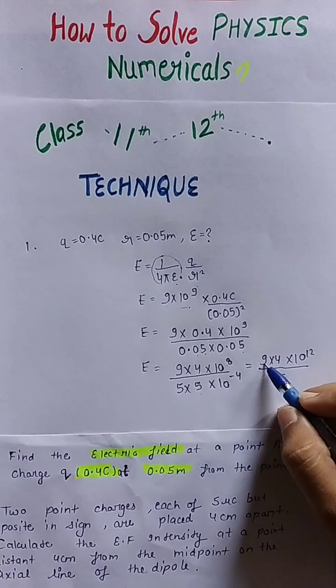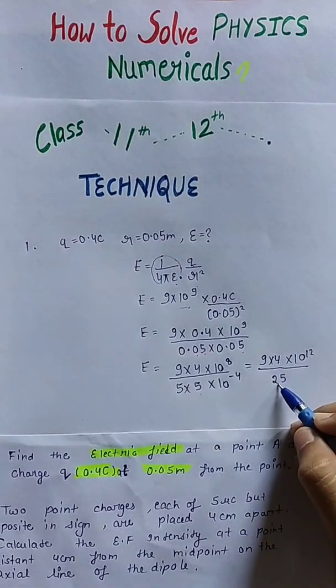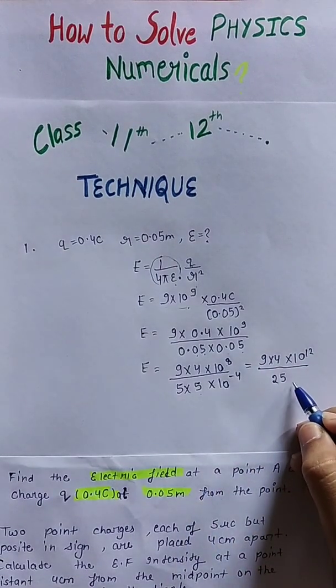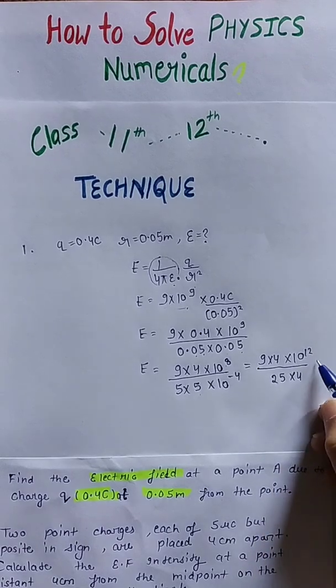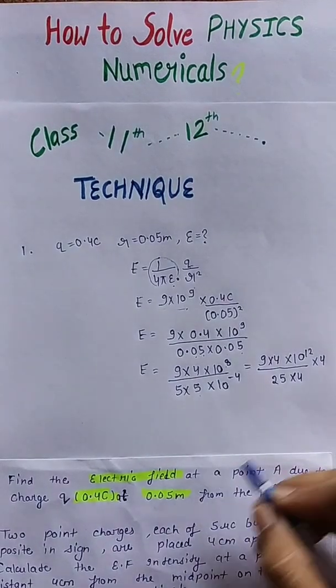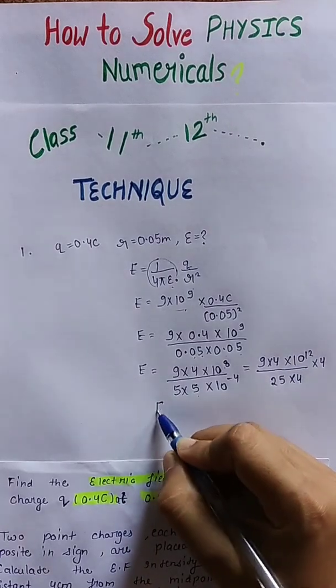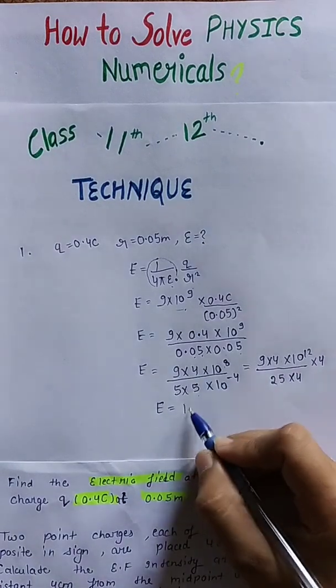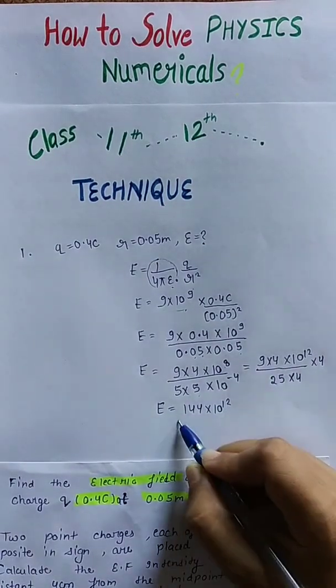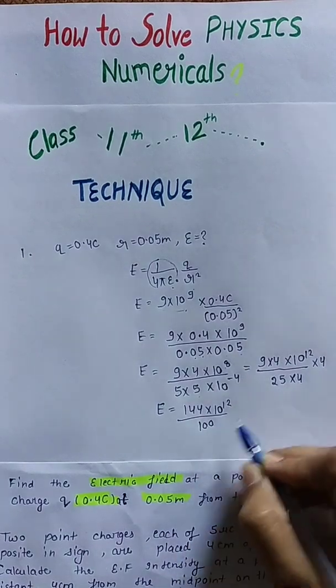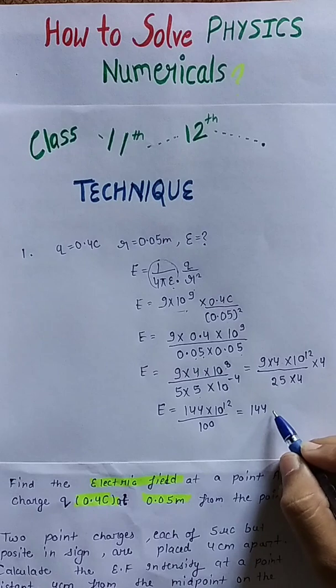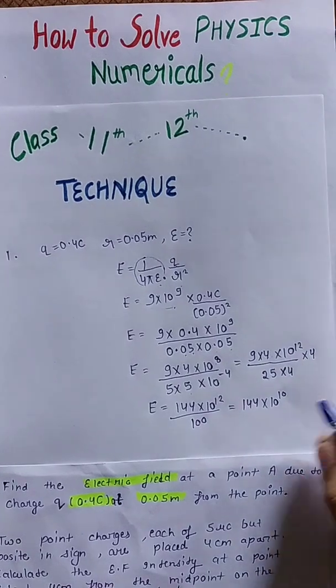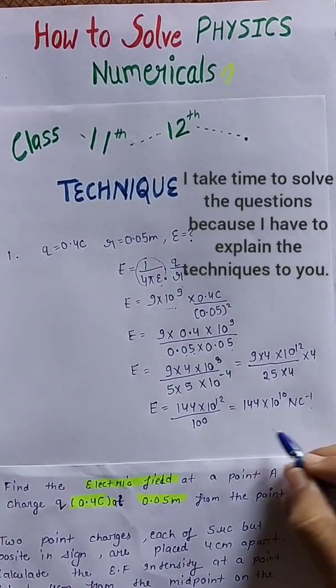Now what we do is multiply 9 into 4 and then divide by 25. But I will not do it like that. As we know that 25 into 4 is 100, I will multiply by 4 into both numerator and denominator to solve the equation easily. Here 4 into 4 is 16, and 9 into 16 is 144 into 10 power 12. And 25 into 4 is 100. Then this equals 144 into 10 power 10. This is the value in Newton per coulomb. This is the required answer.